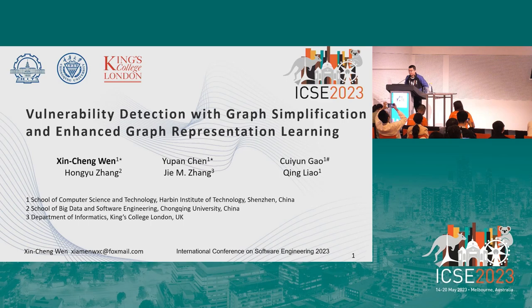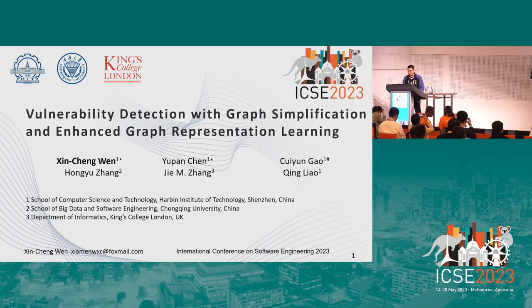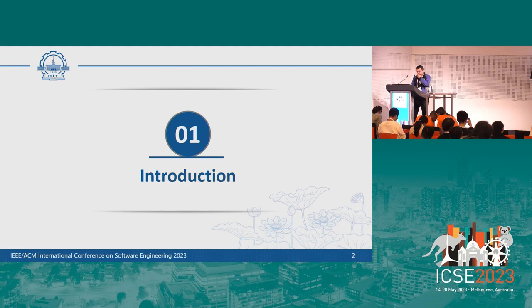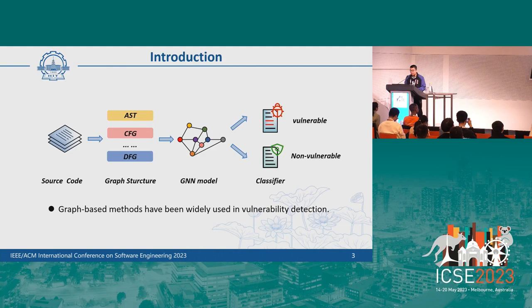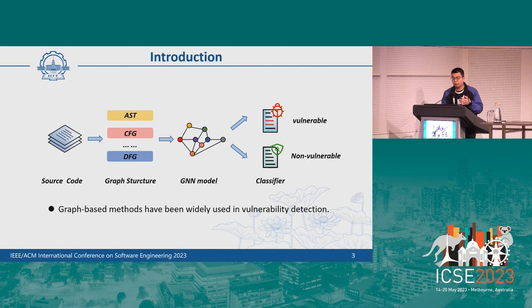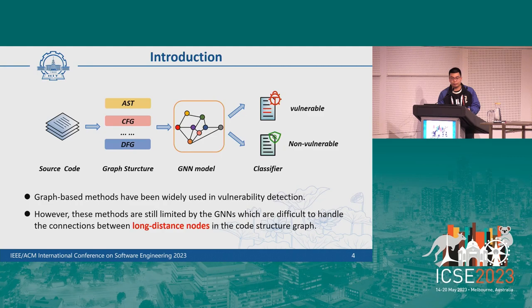Let's thank the author. Hello everyone, my name is Xin Cheng Wen. I'm a master's student from Harbin Institute of Technology, Shenzhen. I'm honored to introduce our teamwork: vulnerability detection with graph simplification and enhanced graph representation learning. This paper is completed by authors from Harbin Institute of Technology Shenzhen, Chongqing University, and King's College London. Deep learning-based vulnerability detection automatically learns patterns of vulnerable code. Graph-based methods use code structure graphs such as AST, control flow graph (CFG), and data flow graph, and leverage GNN models to learn graph representations for vulnerability detection.